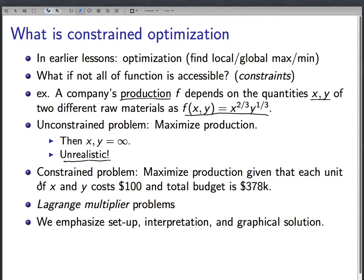And so this leads to what's known as the constrained problem. And the constraint is to maximize production, given that each unit of x and y costs a hundred dollars, and your company only has a total budget to spend on materials of $378,000. That's an example of a constrained problem. It says you're not allowed to choose any values of x and y that you want to maximize this function. You have to choose x and y so that the total cost of them adds up to less than $378,000.